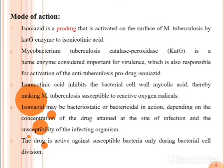The mode of action of isoniazide: it is basically a prodrug. It is activated on the surface of Mycobacterium tuberculosis by the KatG enzyme to form isonicotinic acid. The KatG enzyme — full form: mycobacterial catalase-peroxidase — is a heme enzyme important for virulence, and is responsible for activation of the anti-tuberculosis prodrug isoniazide.